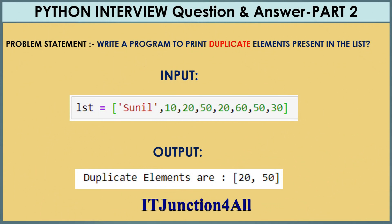Hello friends, this is Sunil and welcome back to my channel IT Junction for all, and this is the Python interview question and answer series part 2. We will discuss the problem statement: write a program to print duplicate elements present in a list. We have been given an input list with a total of 8 elements and we have to give the output as shown.